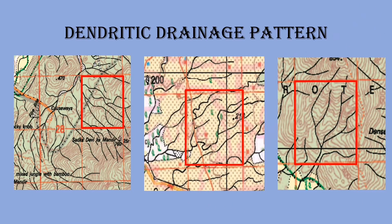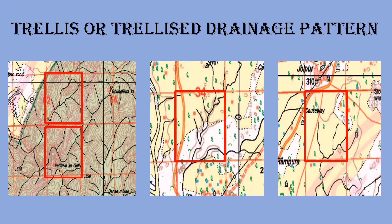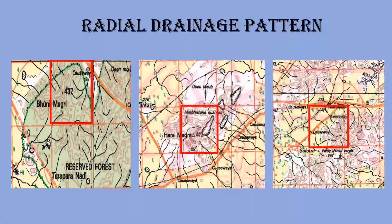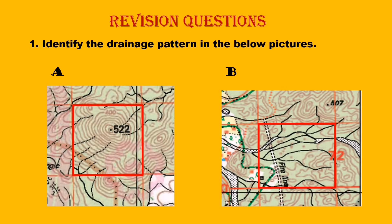Here are some examples of dendritic drainage pattern. This is an example of trellis or trellised drainage pattern — you see the middle stream with tributaries joining at almost right angles and the tributaries are parallel to each other. And here is radial drainage pattern — you can see the contour lines in the middle and water being radiated in all directions from the middle. Even though in dendritic and trellis patterns we also have contour lines, do not get confused.